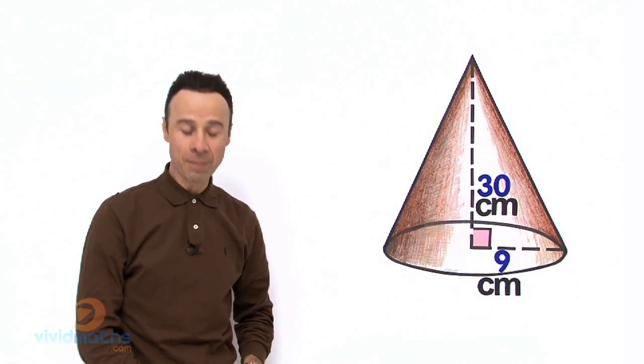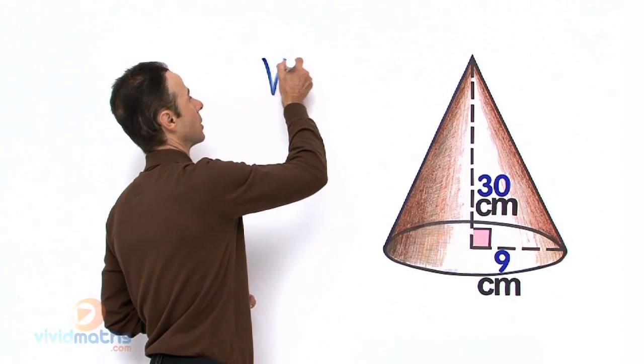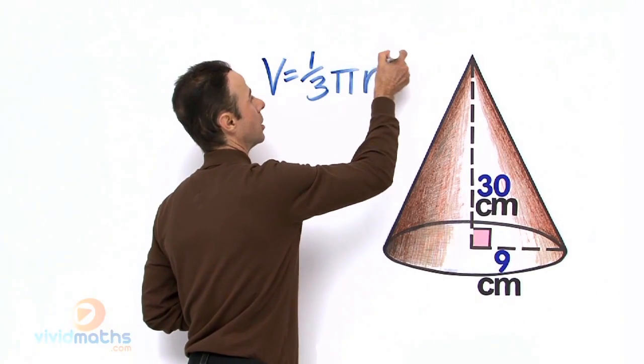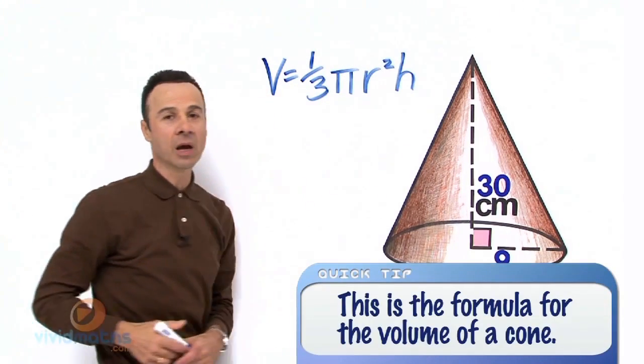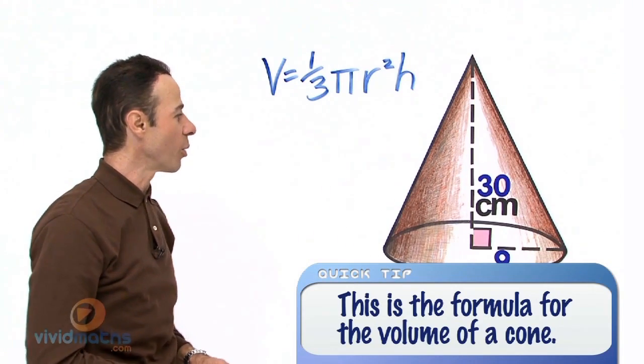Let's begin by writing up the formula, step number one. There we go: one-third pi r squared h. Let's take a look at what we got.